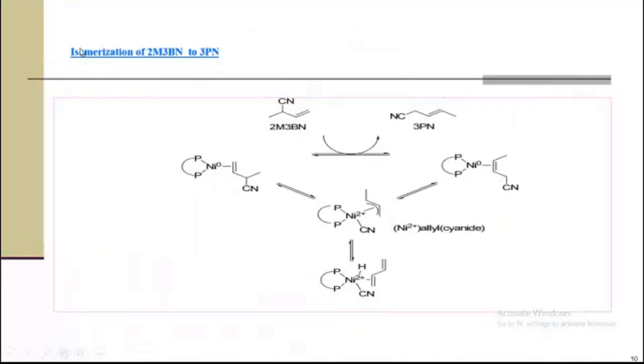Next, isomerization of 2-methyl-3-butenenitrile to 3-pentenenitrile. Here we have 2M3BN, which is isomerized into 3PN. This CN is changed to the terminal side. How it takes place? First it reacts with nickel phosphine. After that, this cyanide will be transferred on nickel and we will get an adduct with alkyl. Nickel-allyl-cyanide will be formed. After that, the hydrogen from this carbon will be shifted here.